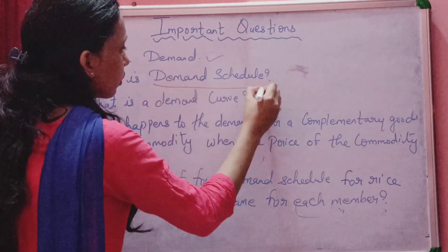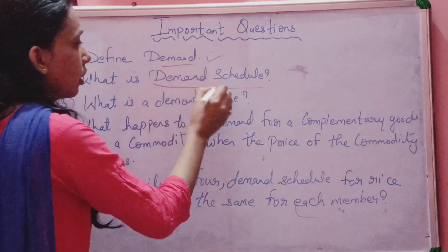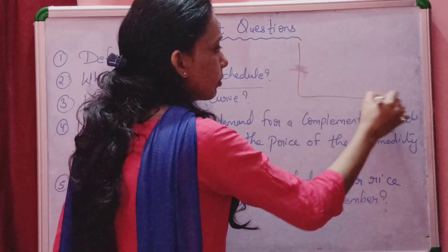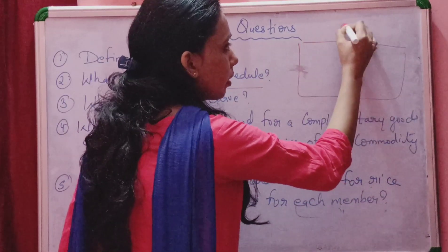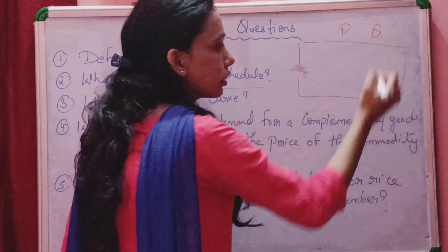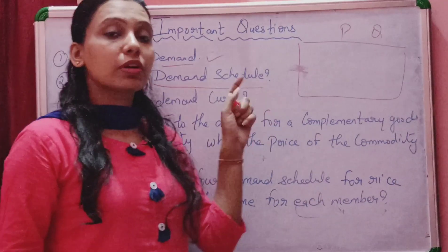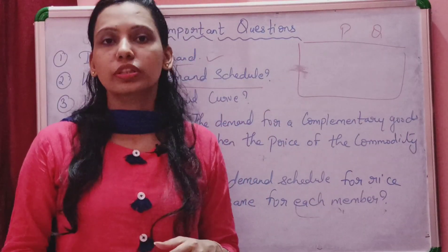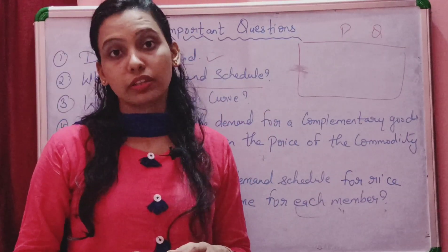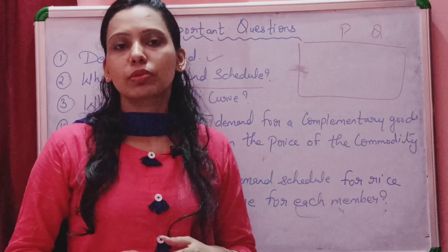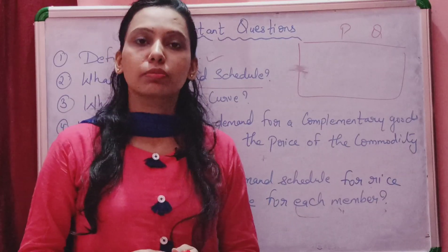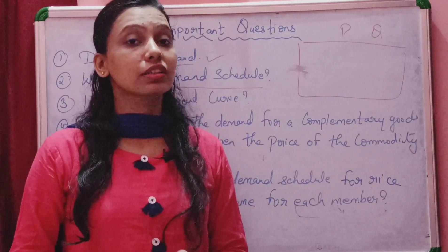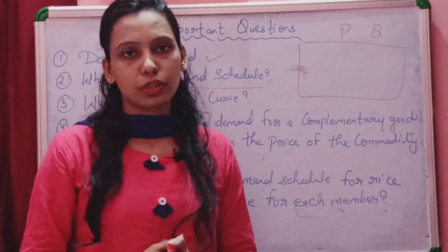The second question is: what is a demand schedule? In a demand schedule, we show two things — price and quantity. We observe the effect on quantity demanded when the price changes. We see an inverse relationship between price and quantity demanded. Therefore, the demand curve is sloping downward.